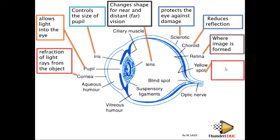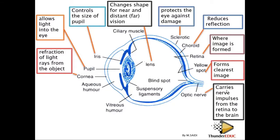The yellow spot, also called the fovea, is where the clearest image is formed. It is the part that bends outward on the retina. When you tilt your head to see someone clearly, you are trying to make the image fall on the yellow spot — the fovea — where vision is sharpest.